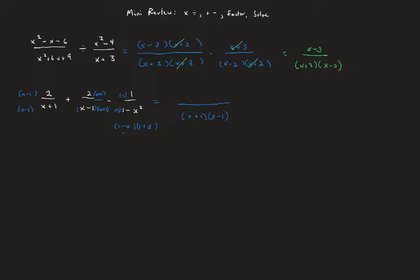Now I'll distribute. 2 times x minus 1 gives 2x minus 2. Distributing 2 over x plus 1 gives 2x plus 2. The negative 1 times negative 1 cancels, so we get a plus 1. Combining like terms: the negative 2 and positive 2 cancel, the 2x plus 2x gives 4x, and that other 1 stays. Nothing cancels further, so the final answer is 4x plus 1 over x plus 1 times x minus 1.